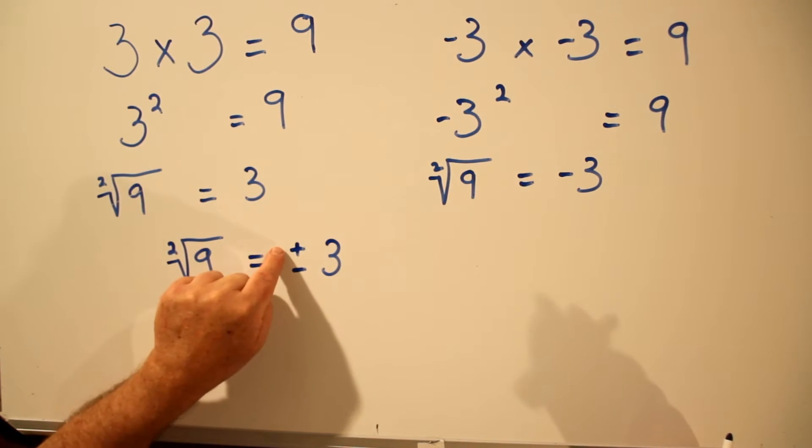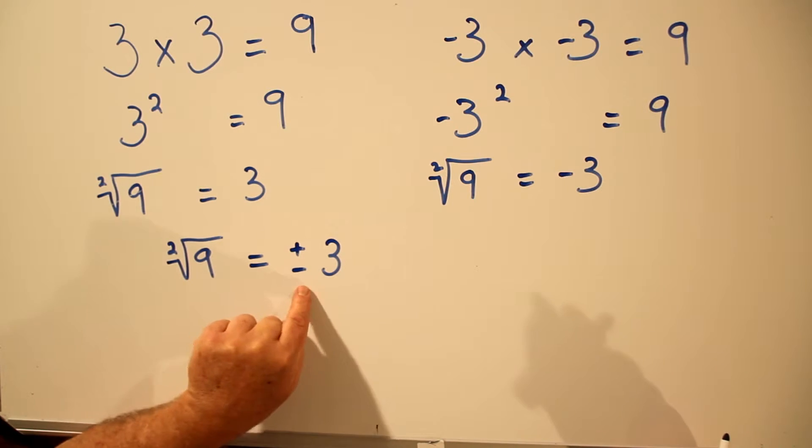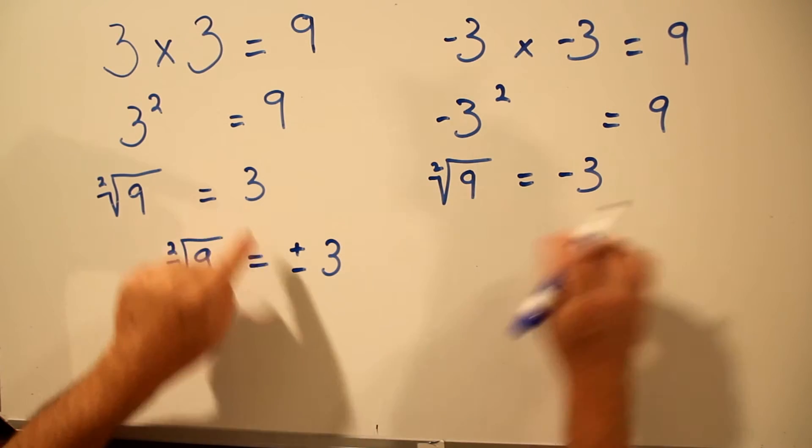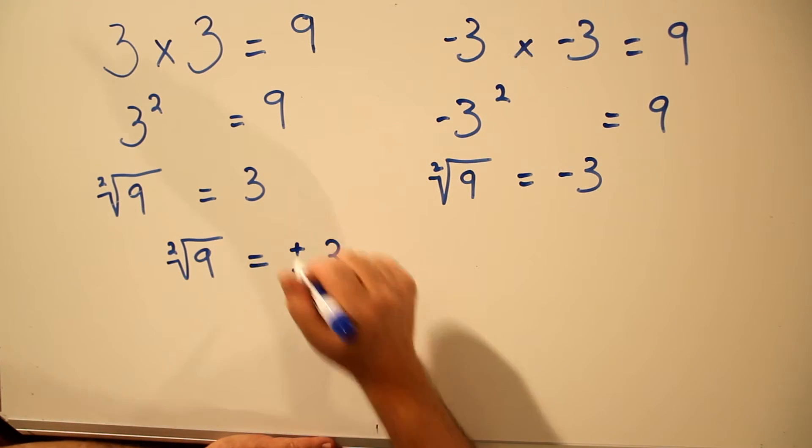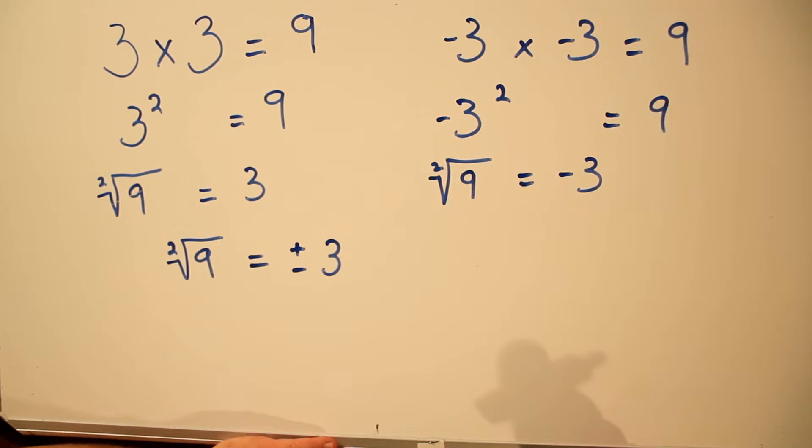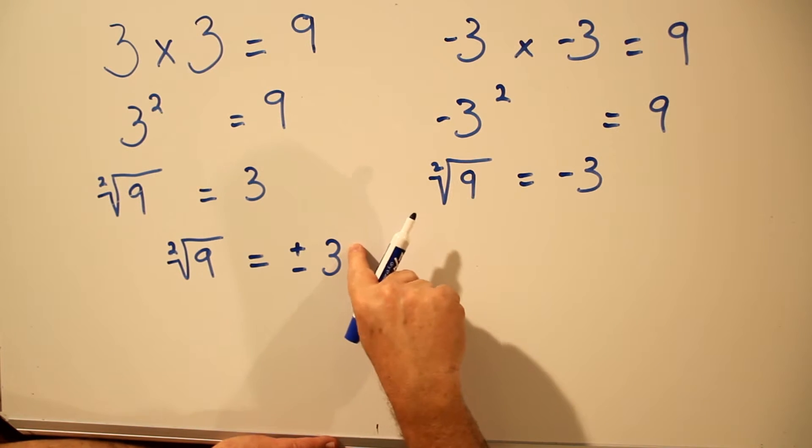The square root of 9 equals plus or minus 3. This is two answers. It's plus 3, like this one, and it's minus 3, like this one. But we combine the two, and we just put a plus or minus sign in front of it, and it means two answers, plus 3 and minus 3.